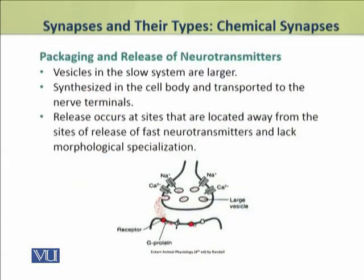The neurotransmitters involved in slow chemical synapses are packed in vesicles which are larger in size than those involved in fast chemical synapses. These neurotransmitters are synthesized in the cell body and are transported to the nerve terminals. They are released from sites located far away from the release sites of fast neurotransmitters, and these sites lack morphological specializations.